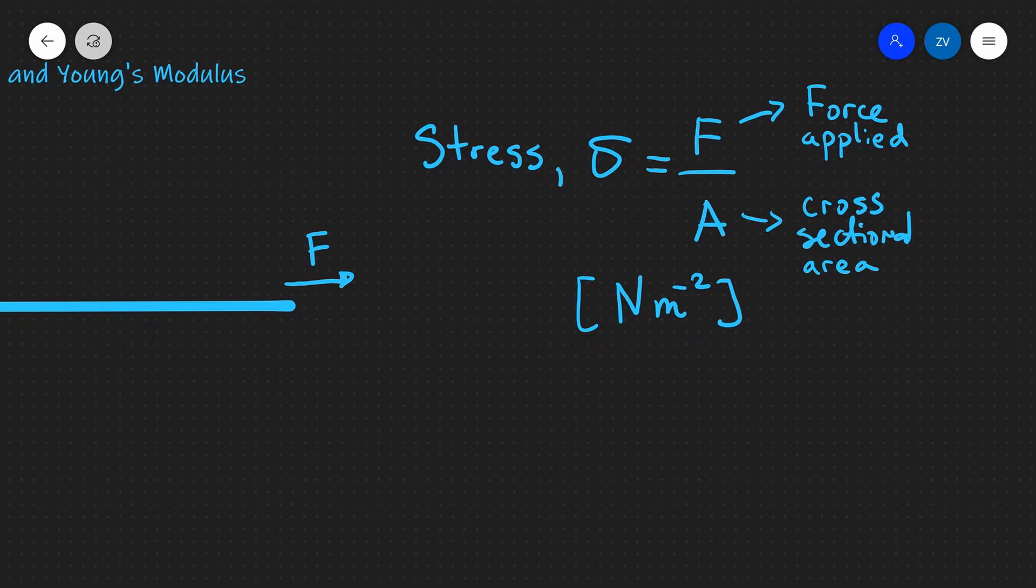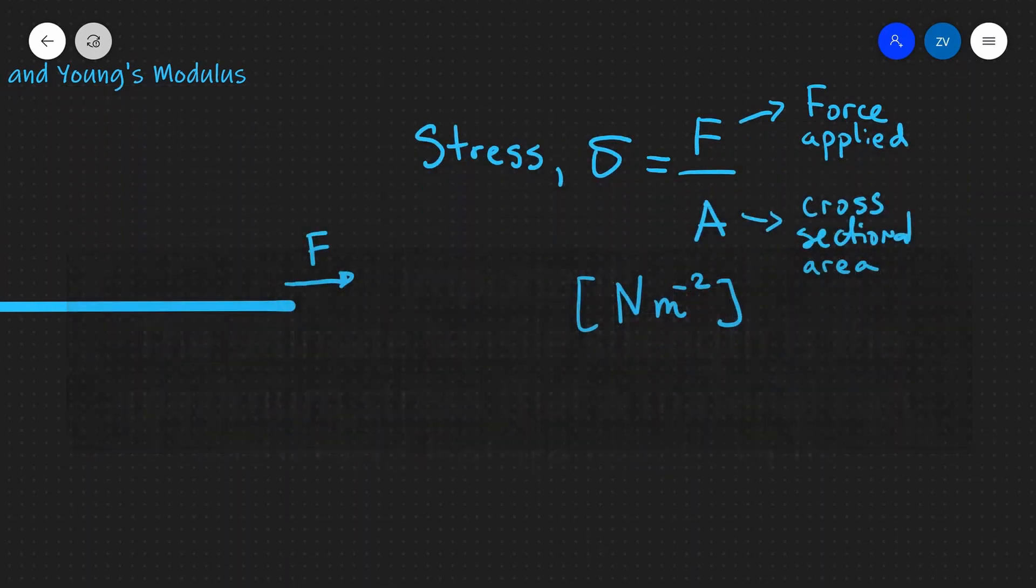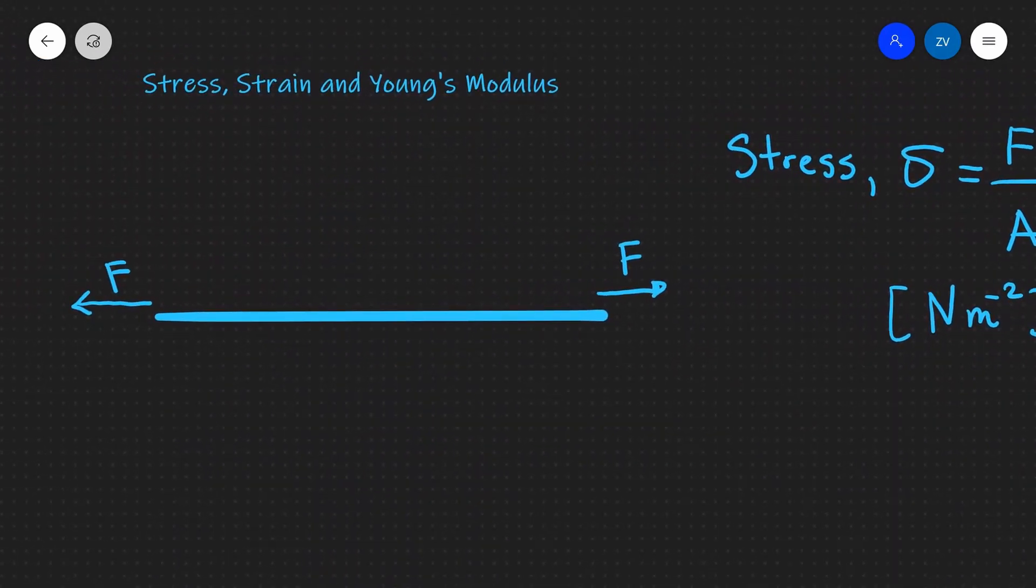Now talking about stress, it's really important as well to define the ultimate tensile strength of the material. This is the maximum stress that a material can withstand while being stretched before it reaches its breaking point. For example, if we were to extend this wire, it will keep on stretching, but at some point, at some amount of force F, it will reach its breaking point—and this is the ultimate tensile strength of this material.